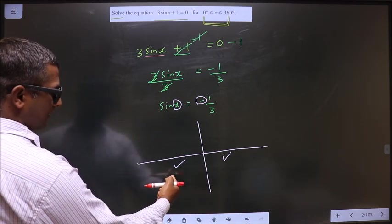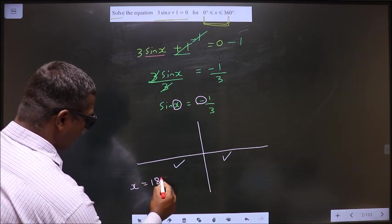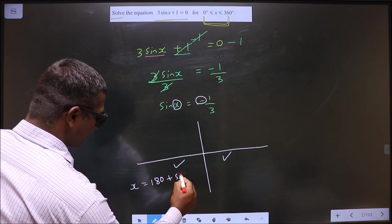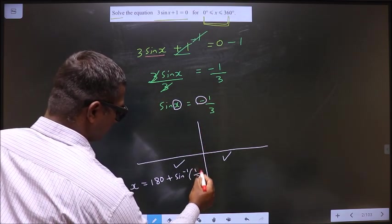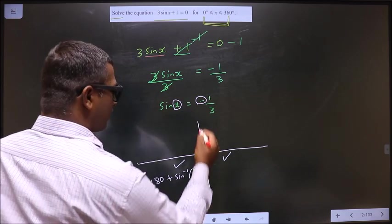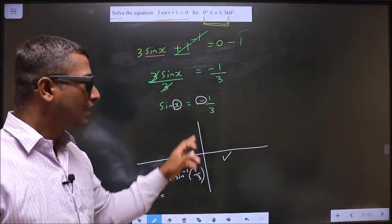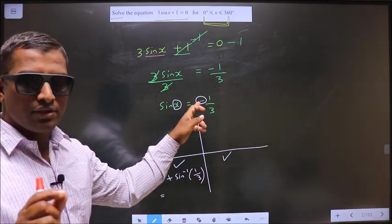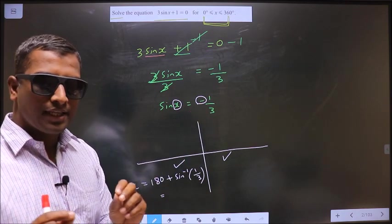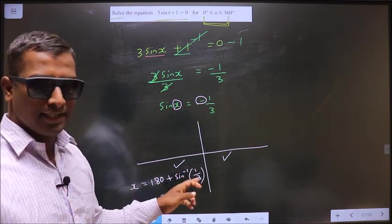To get an angle in the third quadrant, we do 180 plus sin inverse 1 by 3. Do not consider the negative sign again here. The use of the negative sign is only for selecting the quadrants. Once the quadrants are selected, don't put the negative sign again here.